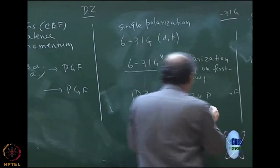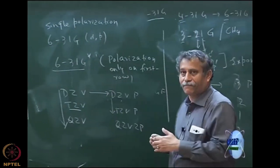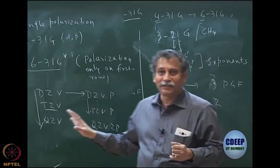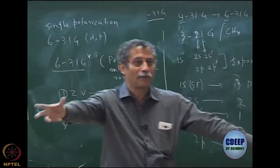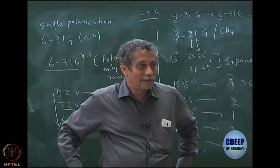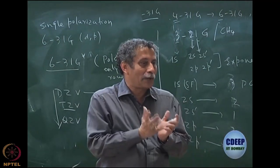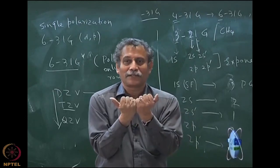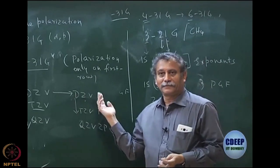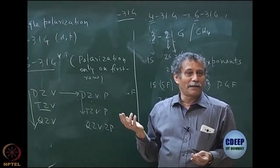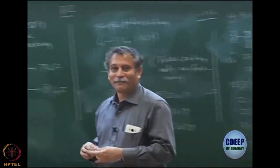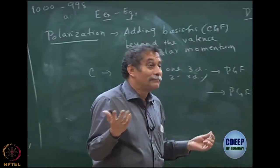Obviously one balanced basis set will give better results than an unbalanced one. You might be asked: given two basis sets, which gives lower energy? Better means lower energy. What is an apple-to-apple comparison? You should be able to tell from the basis set. An apple-to-orange comparison — you cannot definitively say which is better; it depends on the problem.